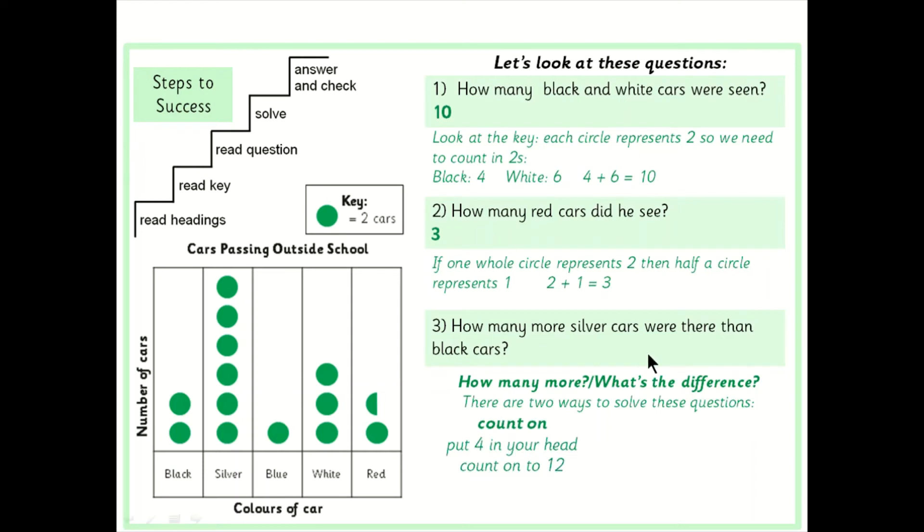So first thing we have to do is actually work out how many silver cars there are and how many black cars. So we already counted up silver on the other slide and we remember that was 12 two four six eight ten twelve and black cars here I have got four two four.